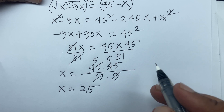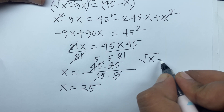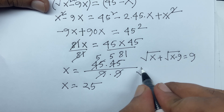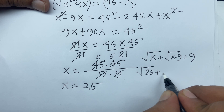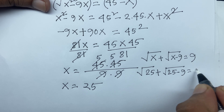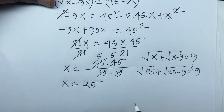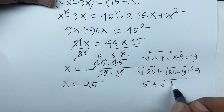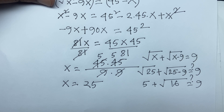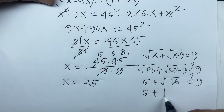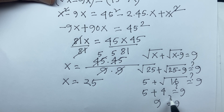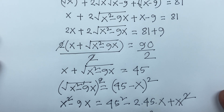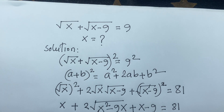Let's verify: our question is square root x plus square root of x minus 9 equals 9, and x equals 25. So square root of 25 plus square root of 25 minus 9 equals 5 plus square root of 16, which is 5 plus 4 equals 9. So 9 equals 9 — x equals 25 is our correct answer. Thank you all. If you enjoyed this video, please subscribe to my channel and like this video. Goodbye, take care.